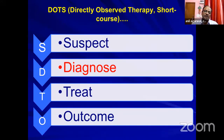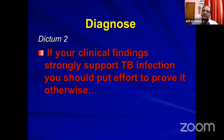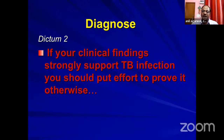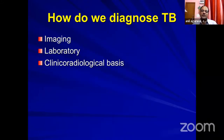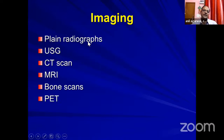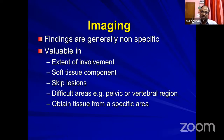Moving on to the diagnosis section — this is the most important part for fellows. If your findings strongly suspect tuberculosis, you should put effort to prove otherwise. We have achieved a 90% histopathological diagnosis rate for cases we suspect as tuberculosis. How do we diagnose? Three modalities: imaging, laboratory, and clinical. Imaging helps localize the lesion and know its extent, but findings are generally non-specific. Blood investigations are also non-specific, and we no longer use IgM and IgG antibodies against tuberculosis.